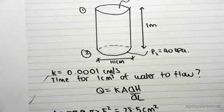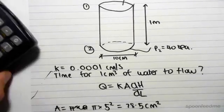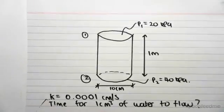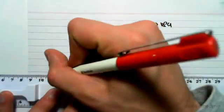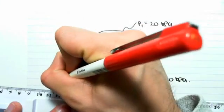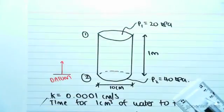Okay, we now need to go and find dH and dL. So straight away, we know that if we're dealing with head, we're going to have to use a datum. So we're going to define our datum at the bottom. So there's our datum.